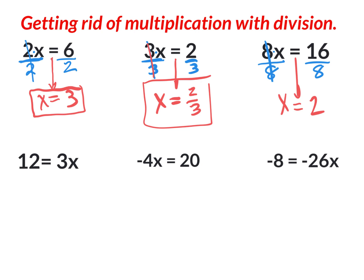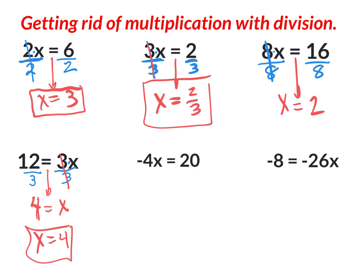This next question says twelve equals three times x. The x is on the right side of the equal sign this time, and it doesn't matter where the x is as long as you get it by itself. I don't want this multiplication of three, so I divide by three and do the same to the other side. Twelve divided by three is four. The three cancels out, leaving x. Four equals x is correct, but it's better to write it as x equals four.